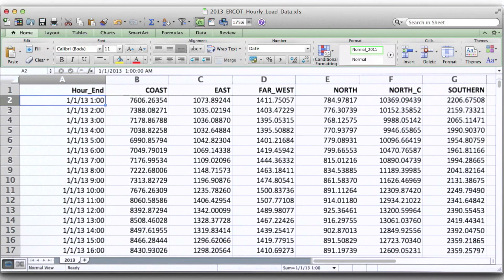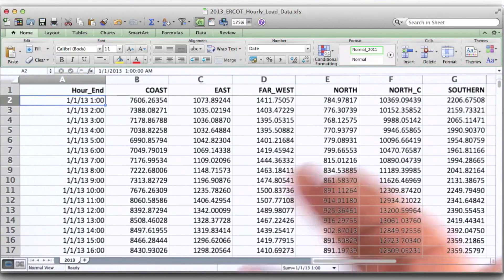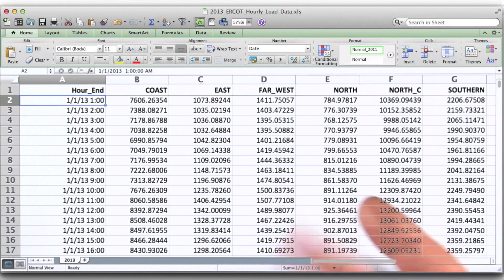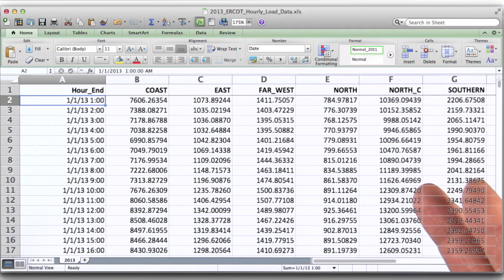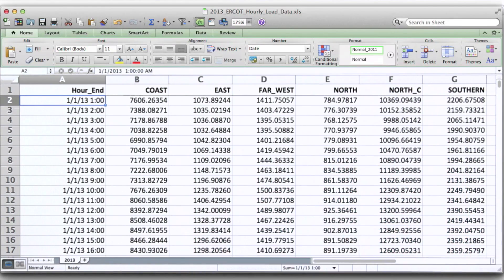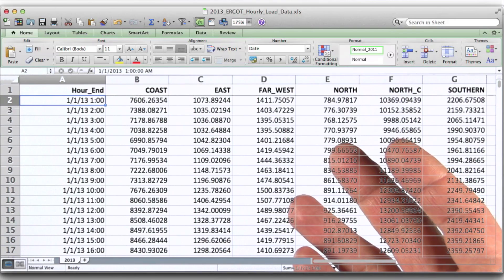They also provide a lot of publicly available data sets on things like load, or the amount of electricity that's used by their customers. This is one such example for the calendar year 2013. A lot of organizations publish this type of data, and often they will publish it as Excel documents.